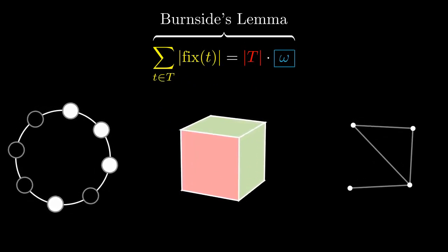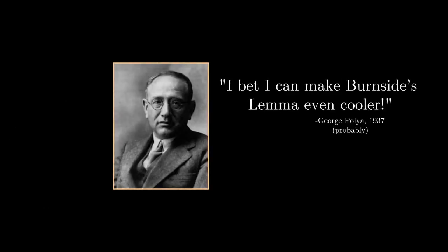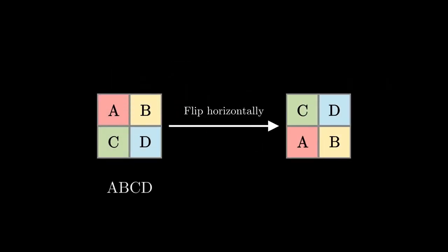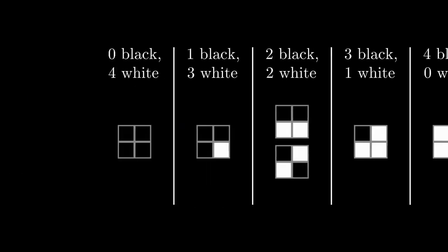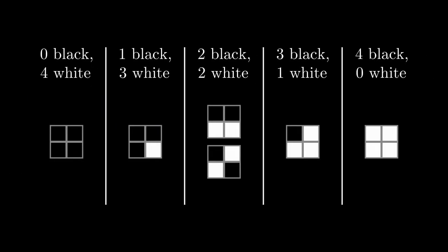However, those examples should scratch the surface of the power of Burnside's Lemma. In 1937, George Polya developed a method that took advantage of the fact that each transformation of the big square represents a permutation of the four little squares in order to use Burnside's Lemma to compute the number of colorings with specific numbers of black and white squares.